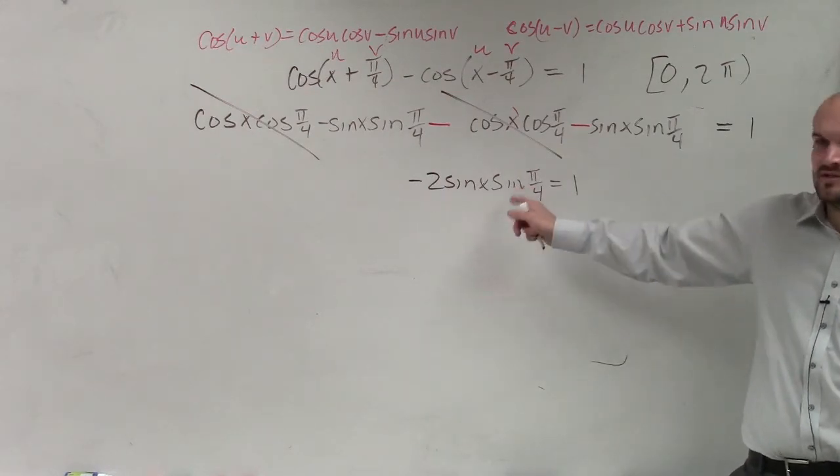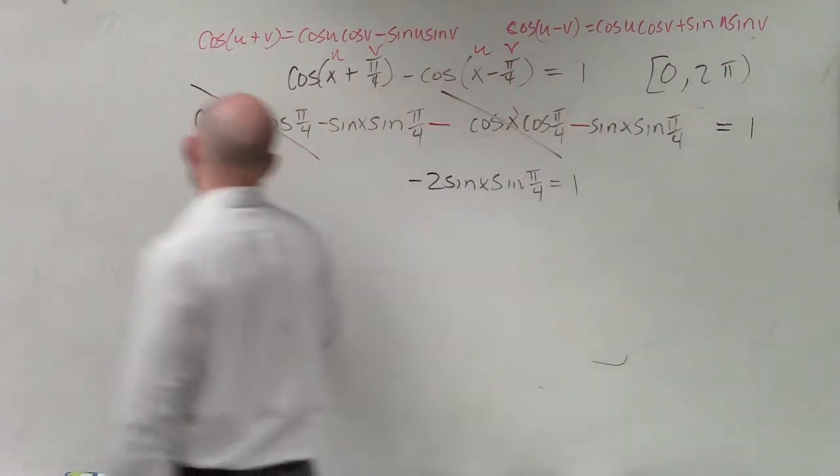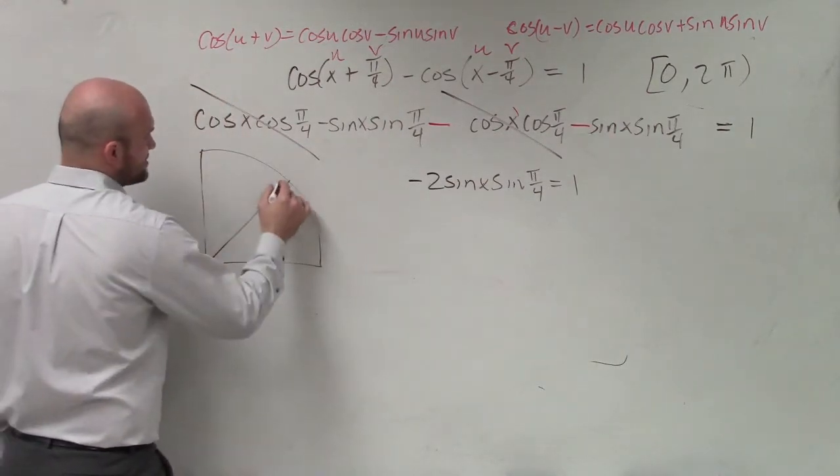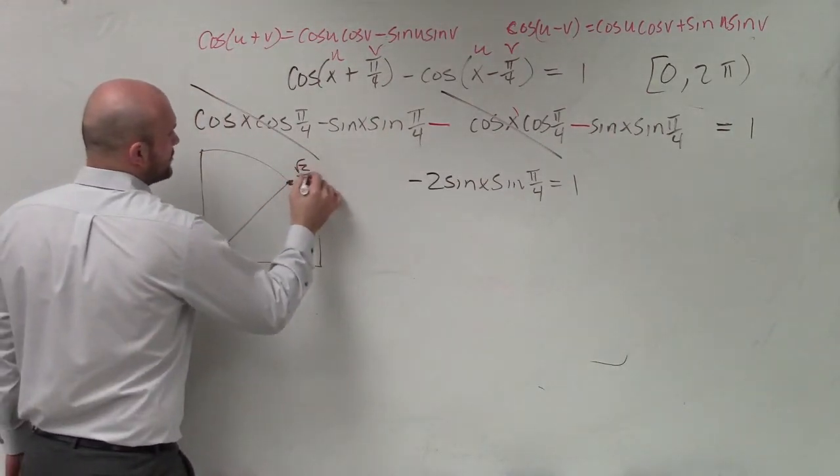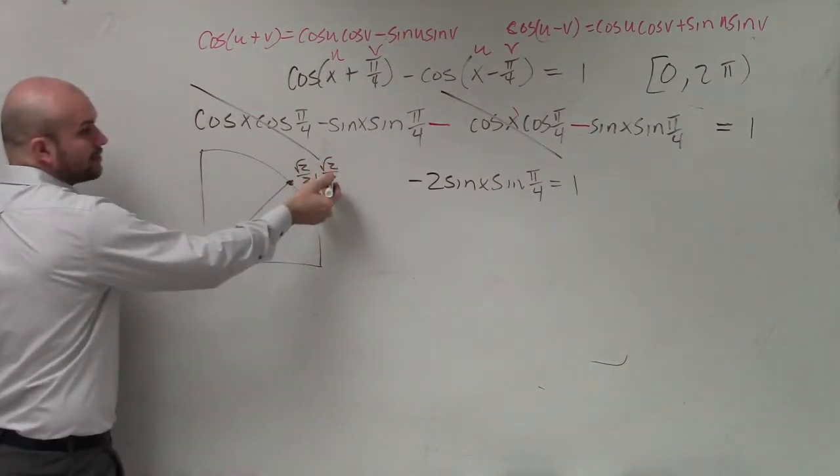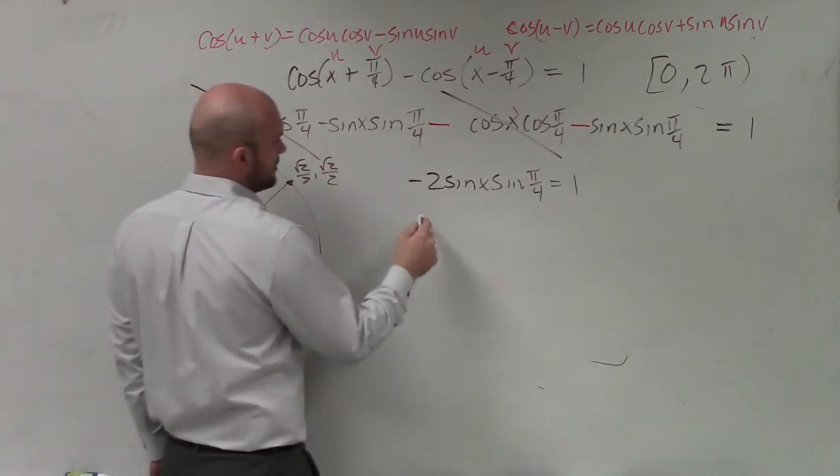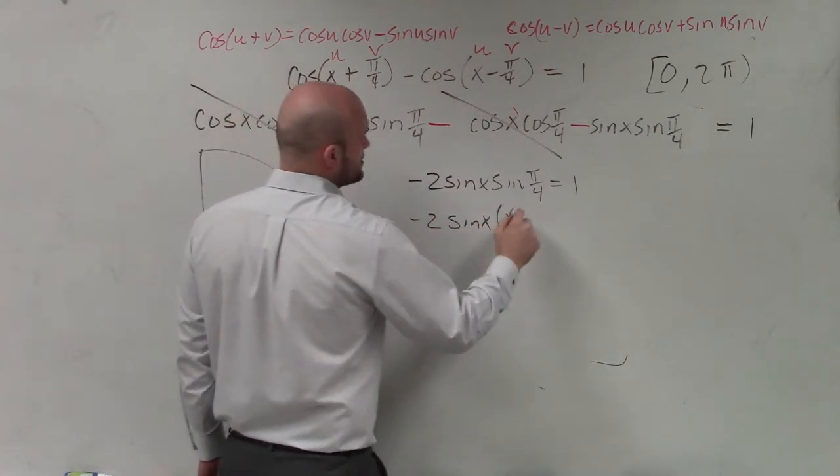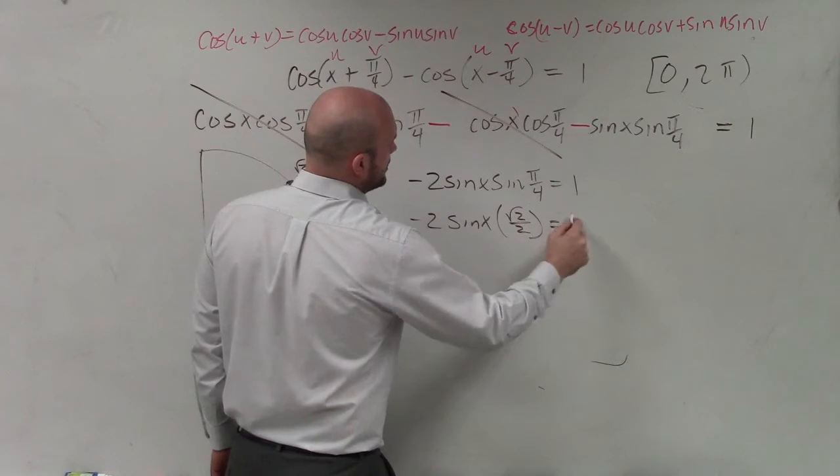Now, let's evaluate for sine of pi over 4. So we go back to our lovely unit circle, look at the first quadrant because that's where pi over 4 is. That angle is square root of 2 over 2, comma square root of 2 over 2. Therefore, the y-coordinate is square root of 2 over 2.